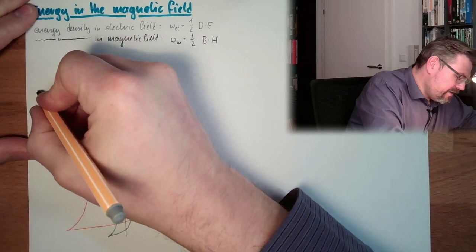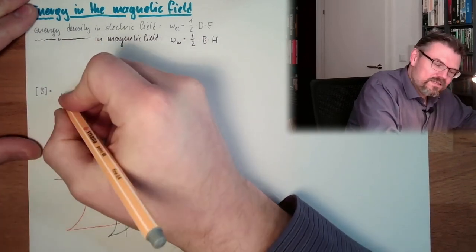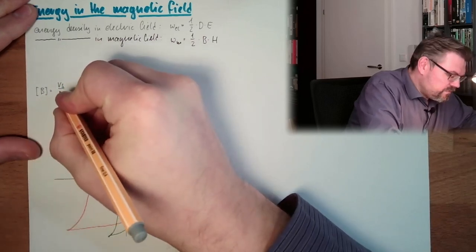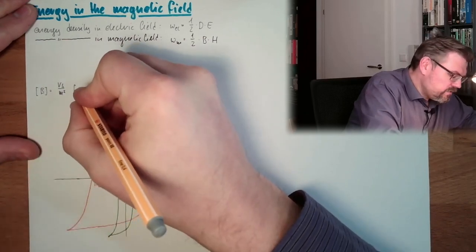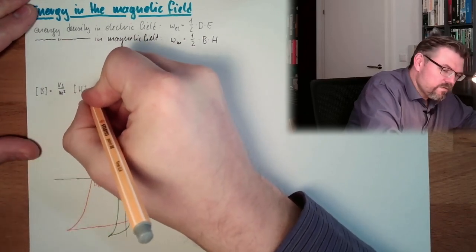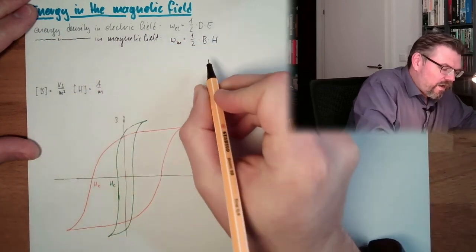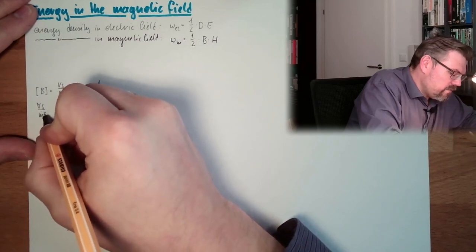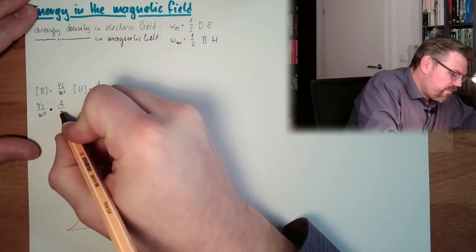So the unit of B, Tesla, that's actually volt seconds per square meter. And the unit of H is ampere per meter. And now let's multiply those two.